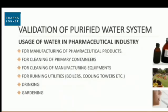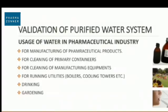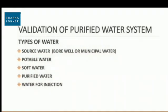The main usages of water in the pharmaceutical industry are: manufacturing of pharmaceutical products, cleaning of primary containers, cleaning of manufacturing equipment, running utilities like boilers and cooling towers, drinking water for employees, and gardening. The broad categories of water are: source water, which can be borewell water or municipal water, potable water, soft water, purified water, and water for injection.